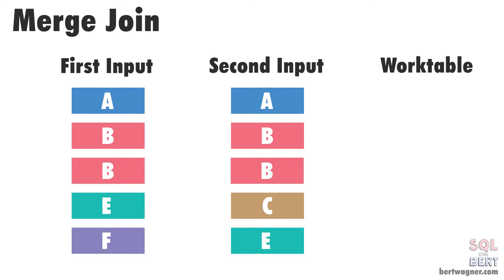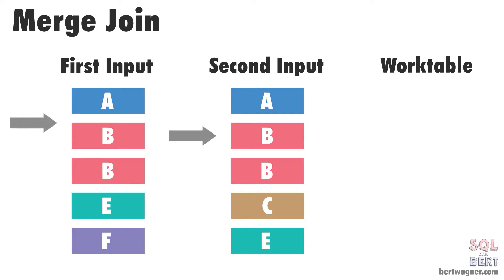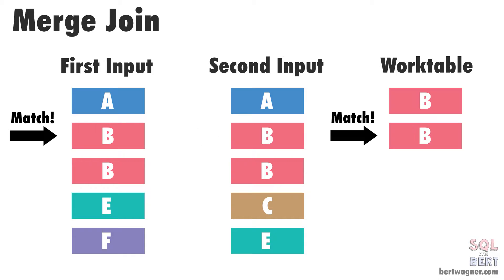Basically it works like this. If we take a similar example as before, but now you can see we have some duplicates in our first input table. SQL Server begins comparing just like it did in our original merge join comparison. But when it finds duplicated values, it writes them into a work table in tempdb and does the comparisons there.